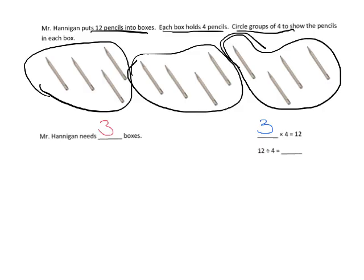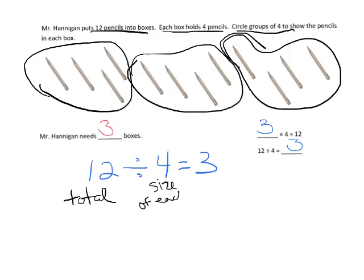And our division problem is twelve divided by four equals three. And in this case, the twelve divided by four equals three, the twelve stands for the total, the four stands for the size of each group, and the three stands for the number of groups necessary.